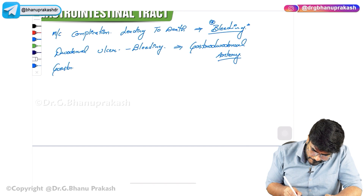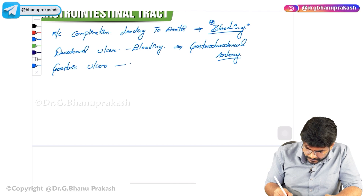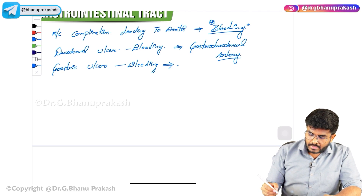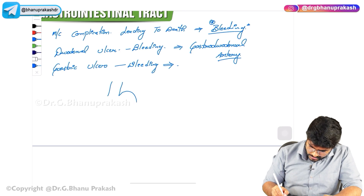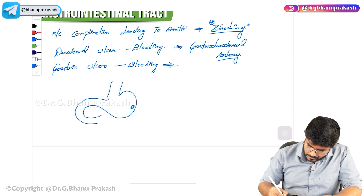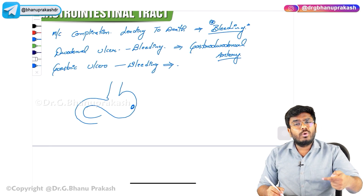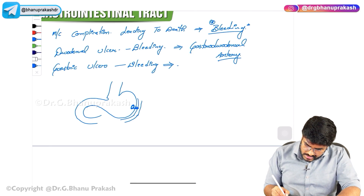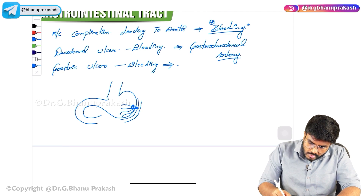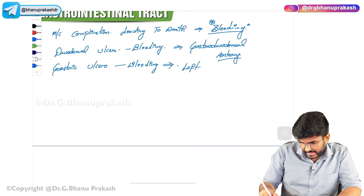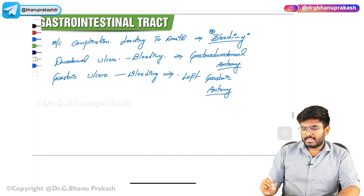For gastric ulcer bleeding, when the gastric ulcer is bleeding, what is the source? Imagine this is the stomach — there is an ulcer here. This ulcer will progress and go deep, damaging the blood vessels present there. These blood vessels will leak, causing bleeding. The source of bleeding for gastric ulcers is the left gastric artery.